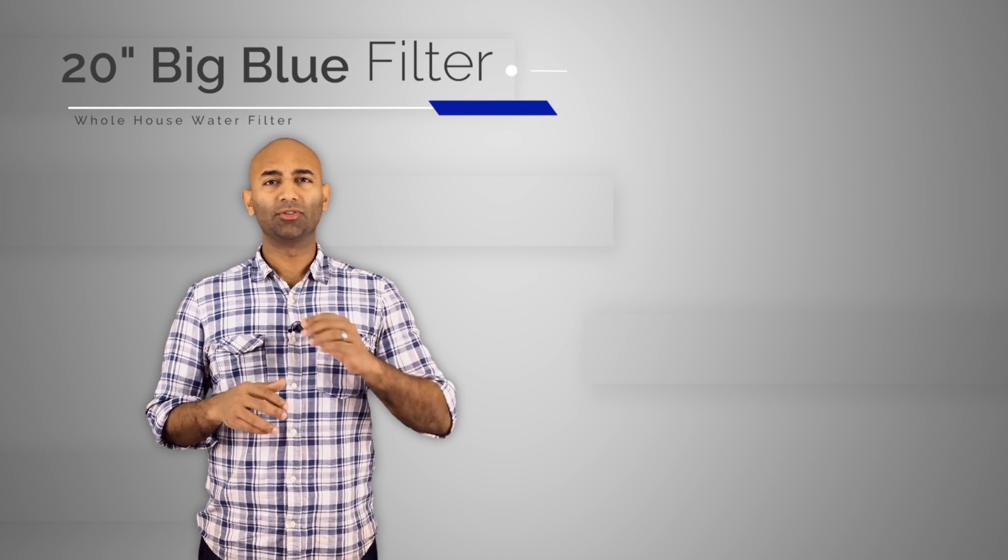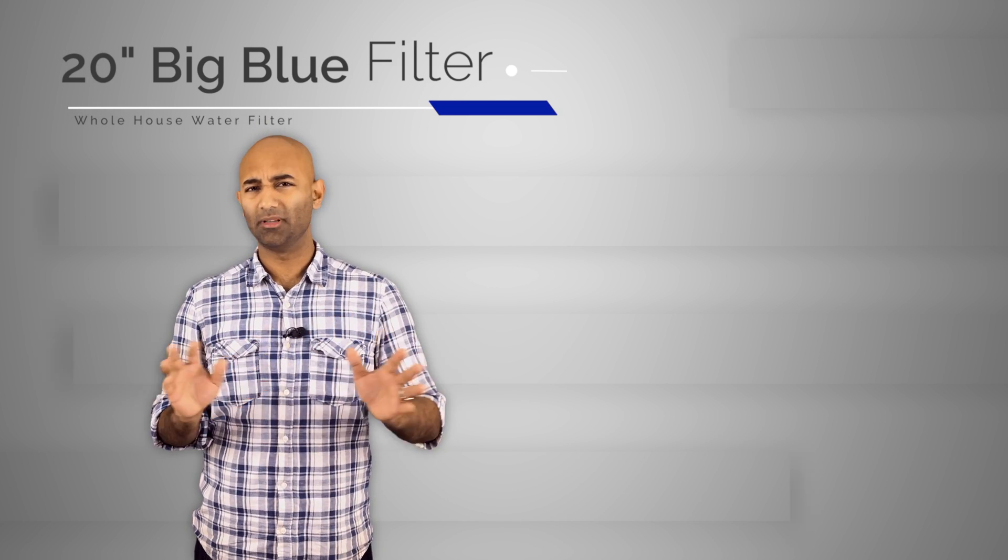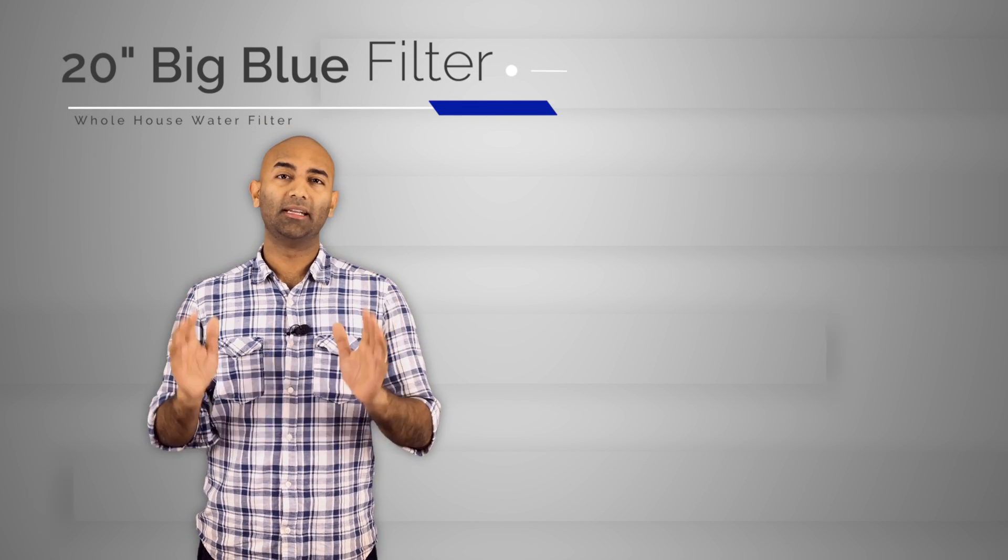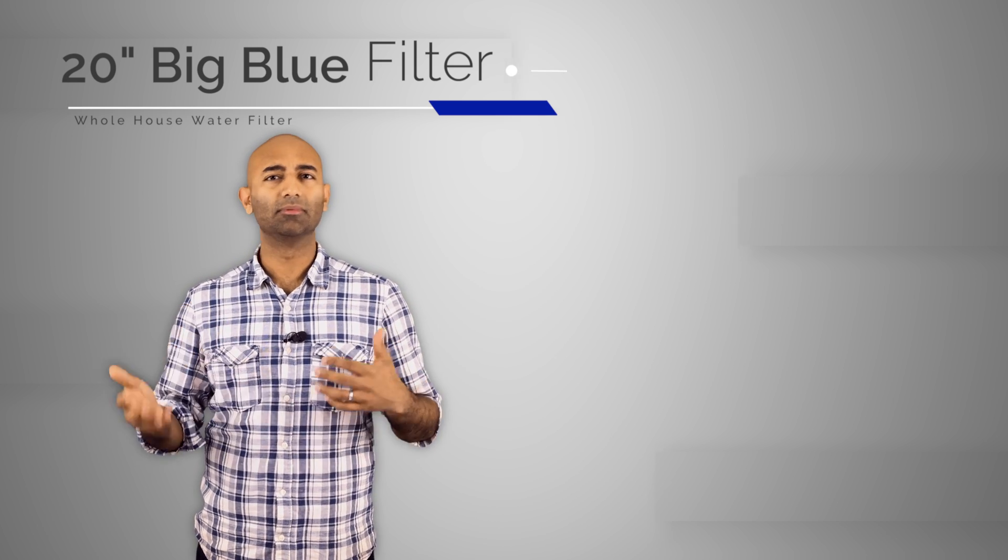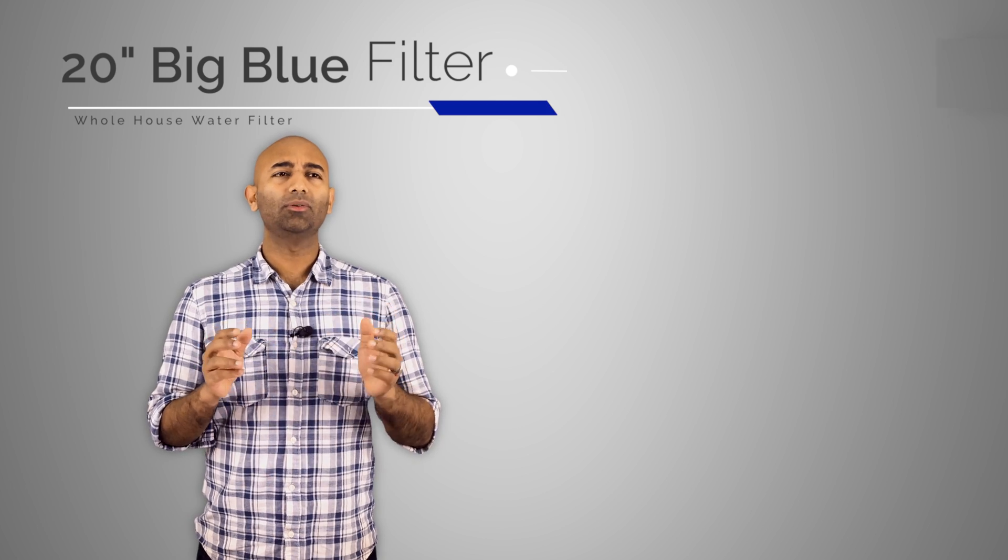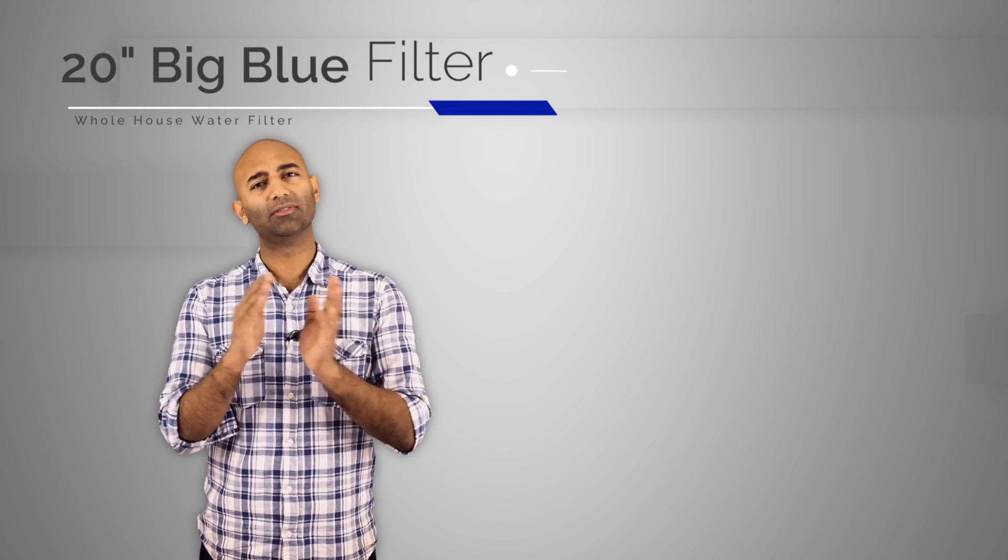The second type of whole house water filter would be a three-stage, they call them big blue filters. These come in two sizes, the 10 inch filters and 20 inch filters. The idea here is you've got either one, two or three stages, three being the most advanced and performance oriented, and they capture different types of particulate and different types of stuff in your water at different stages.